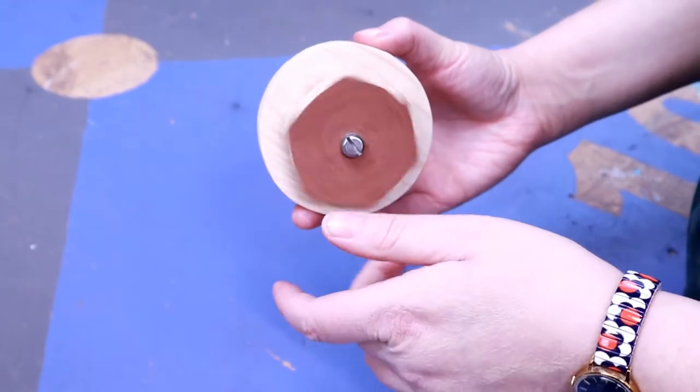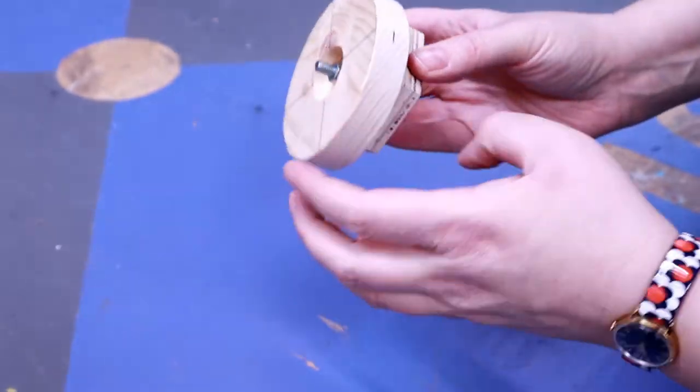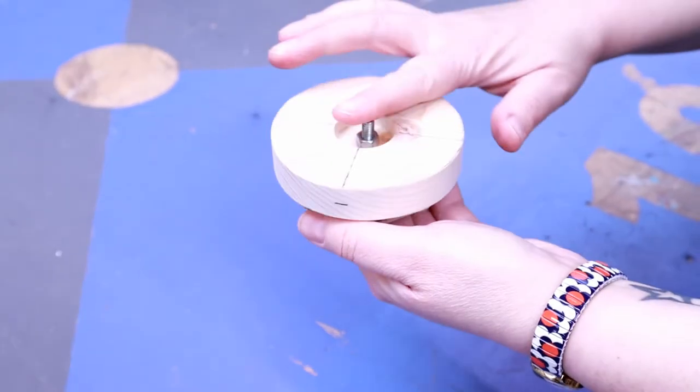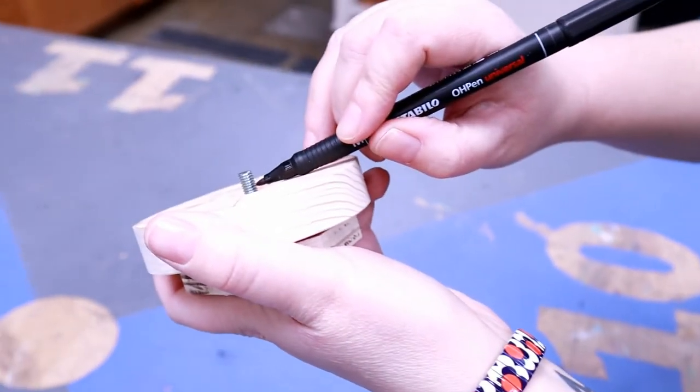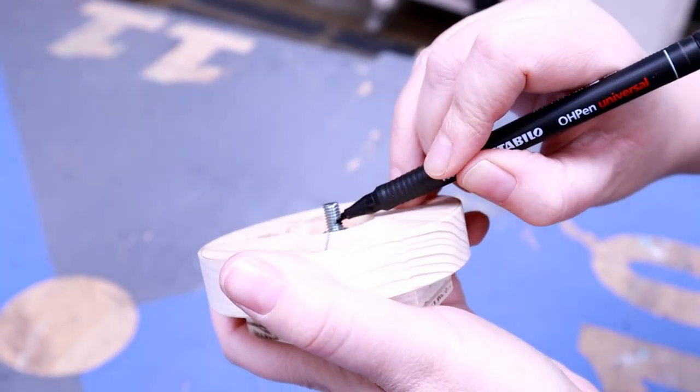It should look something like this. One problem—you can see that this is sticking up, we want to trim that a little bit. So just get a permanent marker pen and mark out where you need to trim.